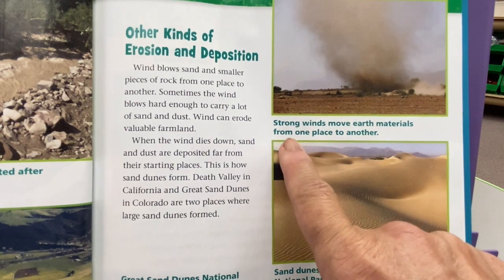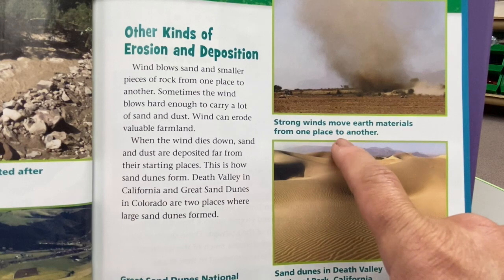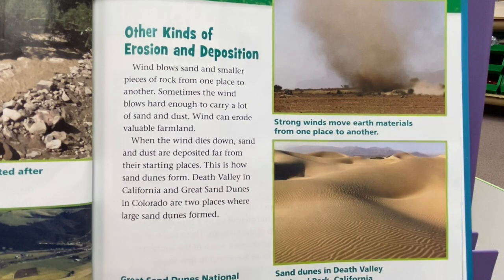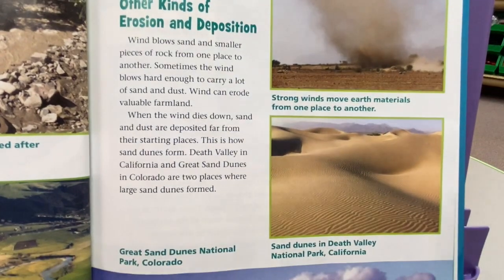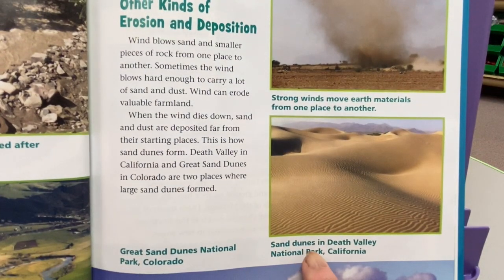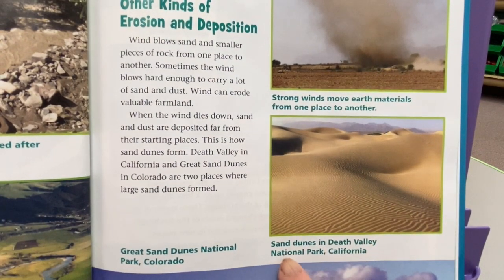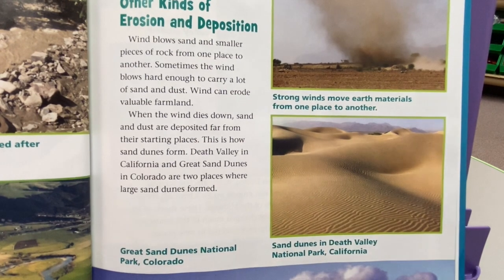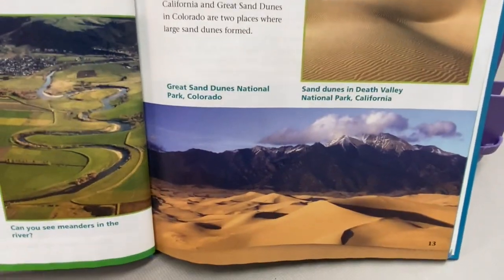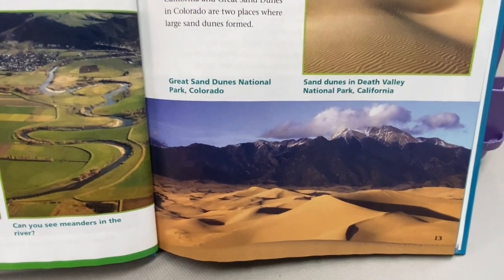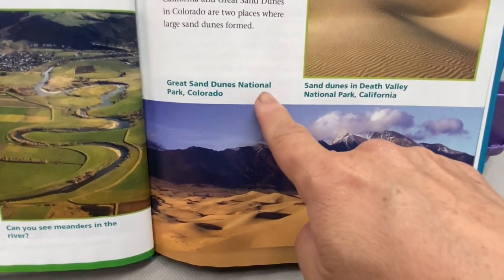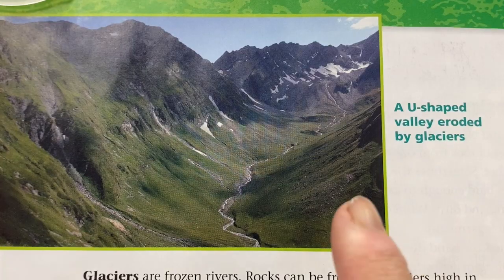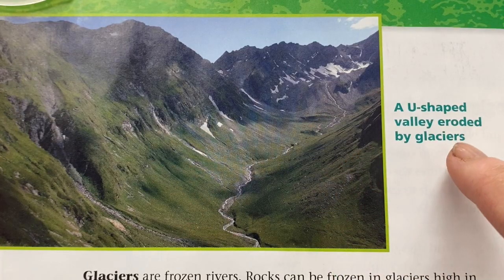In this picture, you see strong winds moving earth materials from one place to another. In this picture, you see the sand dunes in Death Valley National Park, California. Below, you see the Great Sand Dunes National Park in Colorado. This is a picture of a U-shaped valley eroded by glaciers.